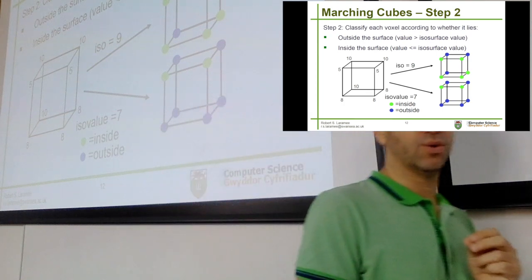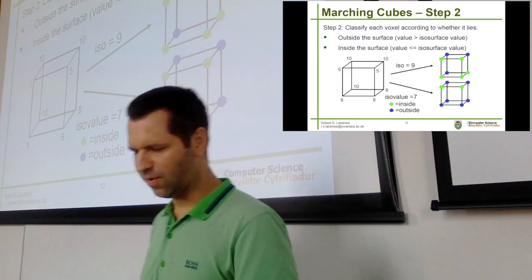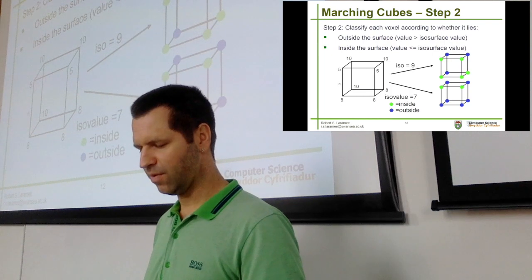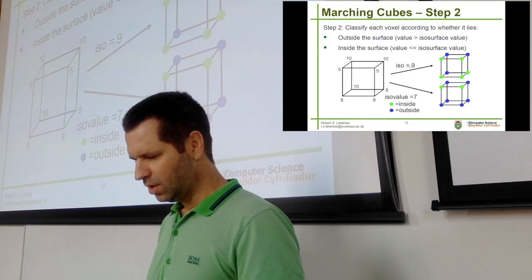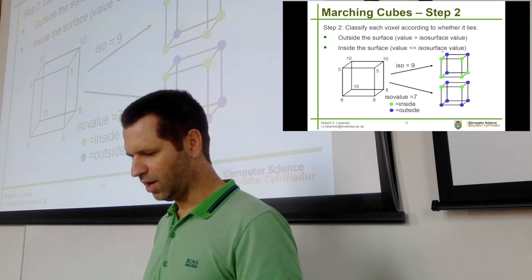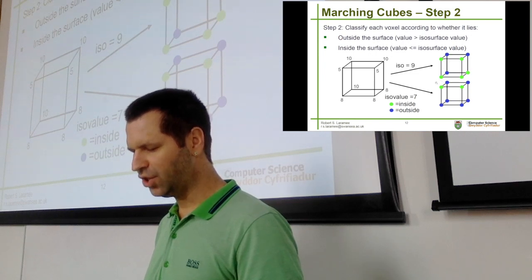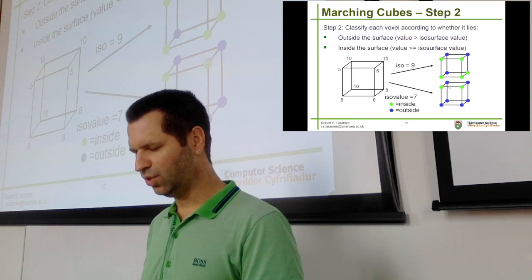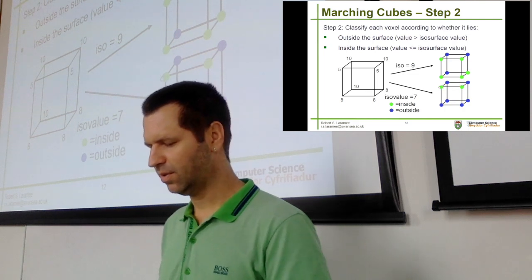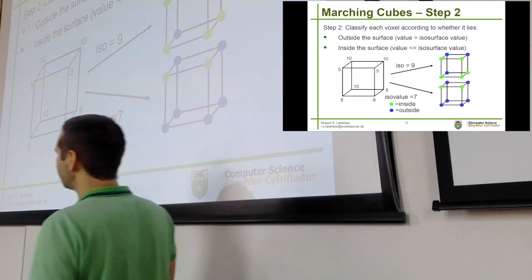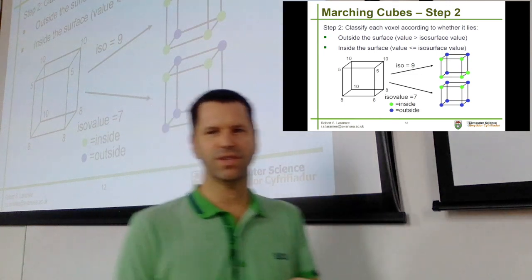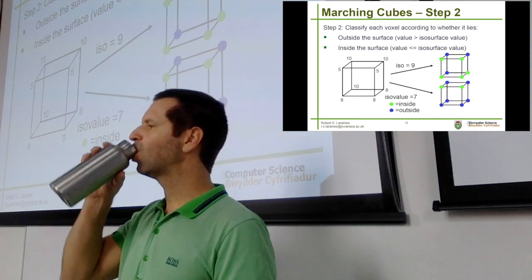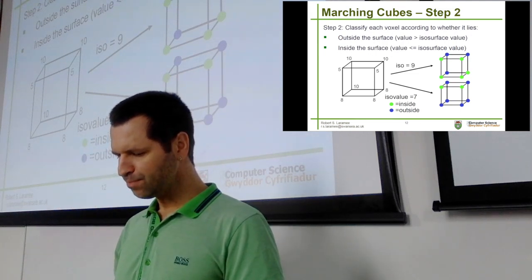We're looking for those areas where the isovalue falls between the data values, just like in the marching squares algorithm. With an isovalue of 9, these three vertices are outside the surface. If we change the isovalue to 7, the results also change — only two of the data values are below 7, so the cube looks different and it's a different surface. A different surface will pass through the cell.